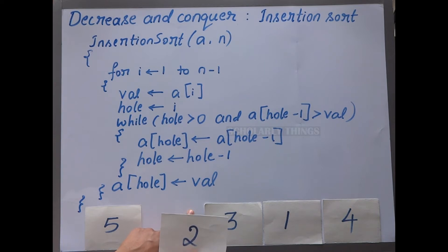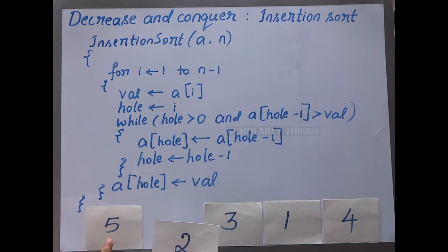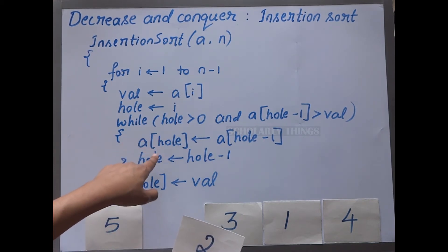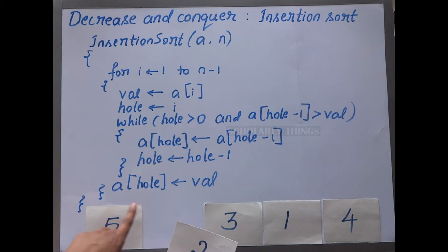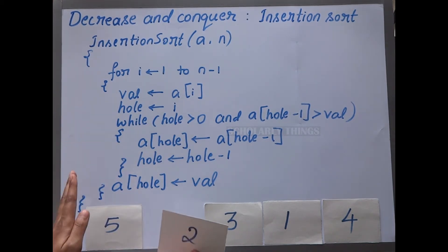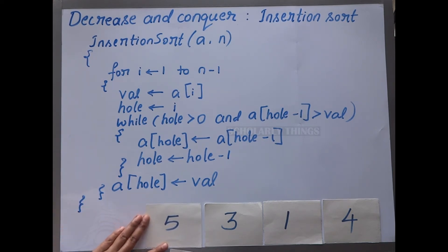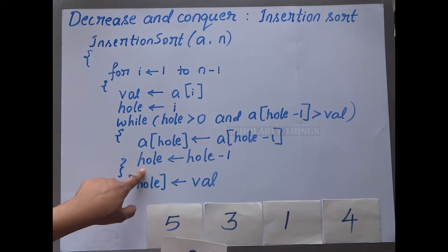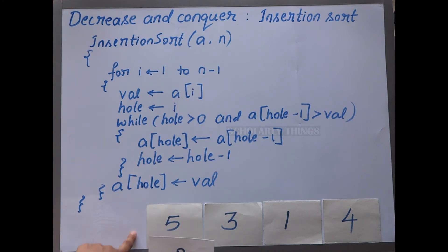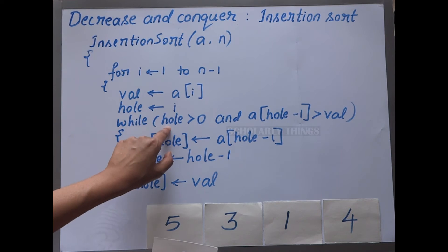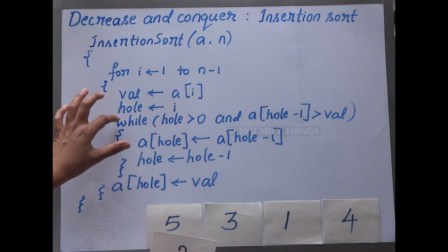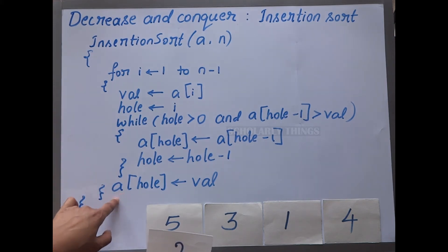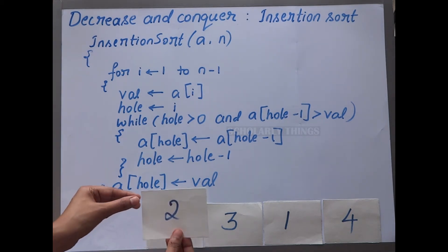We compare the removed element with the element at hole minus 1, which is 5. Since a[hole minus 1] (which is 5) is greater than value (which is 2), we shift: a[hole] equals a[hole minus 1], shifting the element to the right and the hole to the left. The hole is reassigned to hole minus 1. When the hole reaches position 0, the condition hole greater than 0 fails, we exit the while loop, and assign value 2 to a[hole].